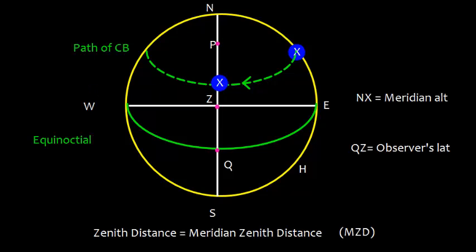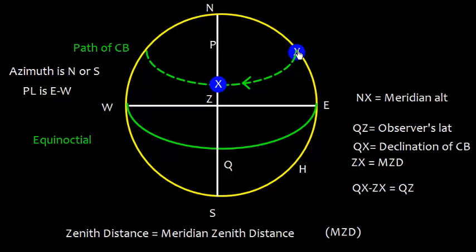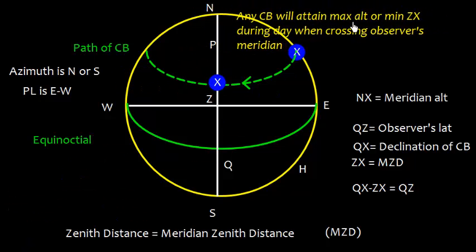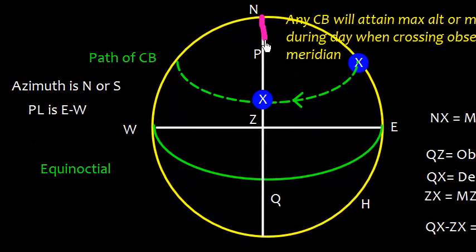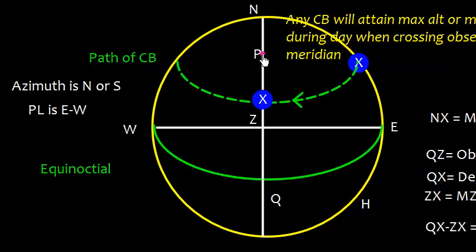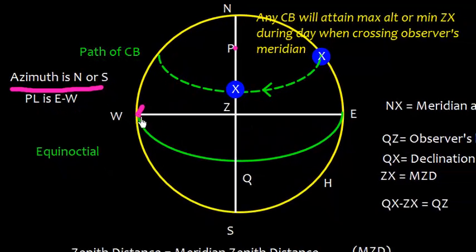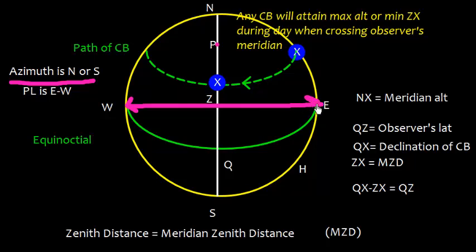At times the body was at the horizon with altitude zero, and it travels on the path of its declination. Declination is the equivalent of latitude on the celestial sphere. As the body rises, it attains maximum altitude, which corresponds to minimum zenith distance, when meridian passage occurs. The azimuth will be either north or south, so the position line will be east or west. This latitude shown here is the latitude of the observer.